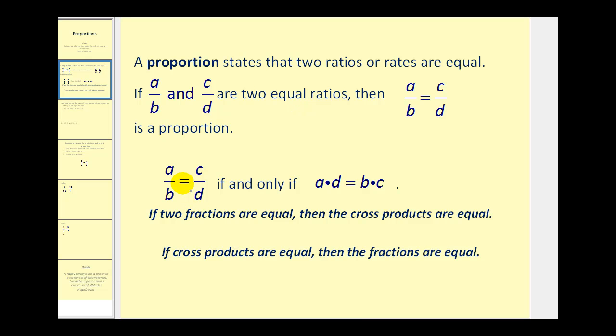And a/b equals c/d if and only if a×d equals b×c. And these are called the cross products of the proportion. a and d are sometimes called the extremes, and b and c are sometimes called the means.